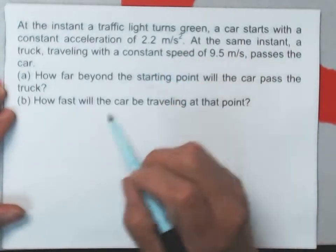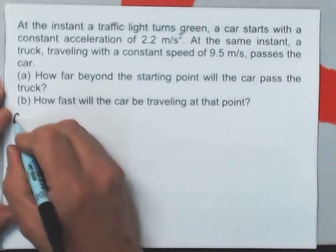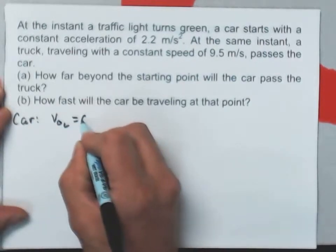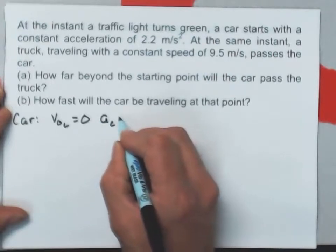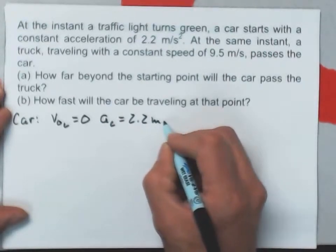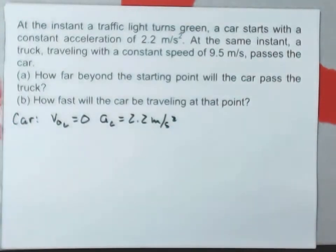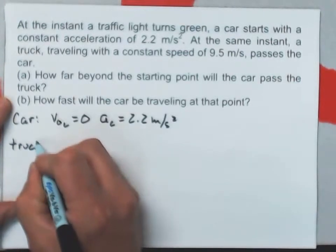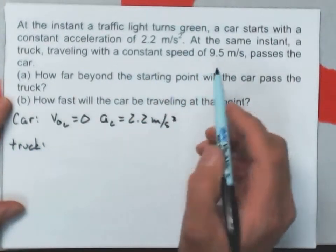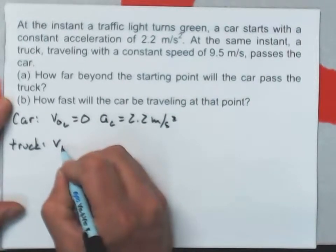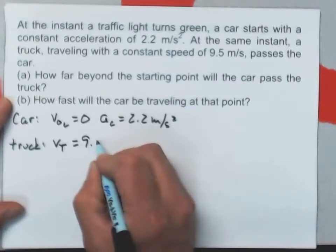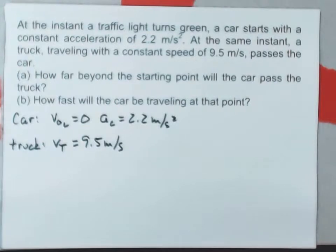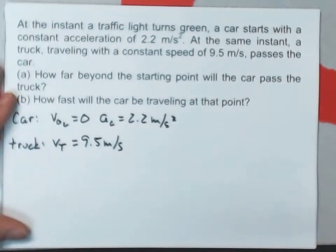We have a car that starts with a constant acceleration and it starts from rest. So for the car, I have that V-naught for the car is zero. Its acceleration is 2.2 meters per second squared. For the truck, I have that it moves with a constant speed. So V for the truck is equal to 9.5 meters per second. And that's a summary of all the information I've got.